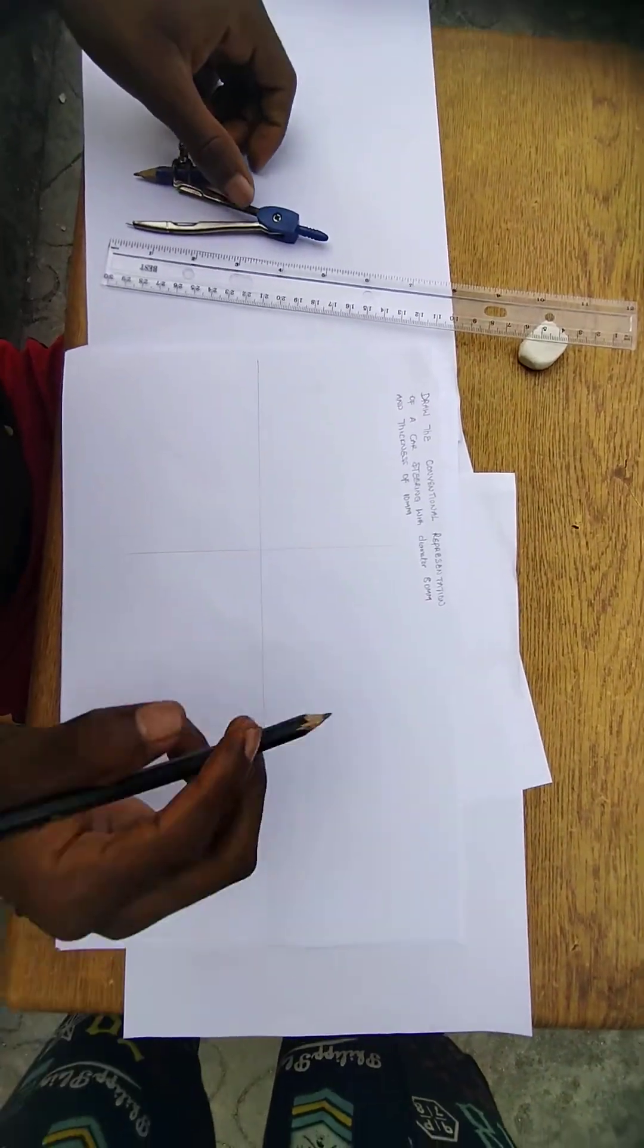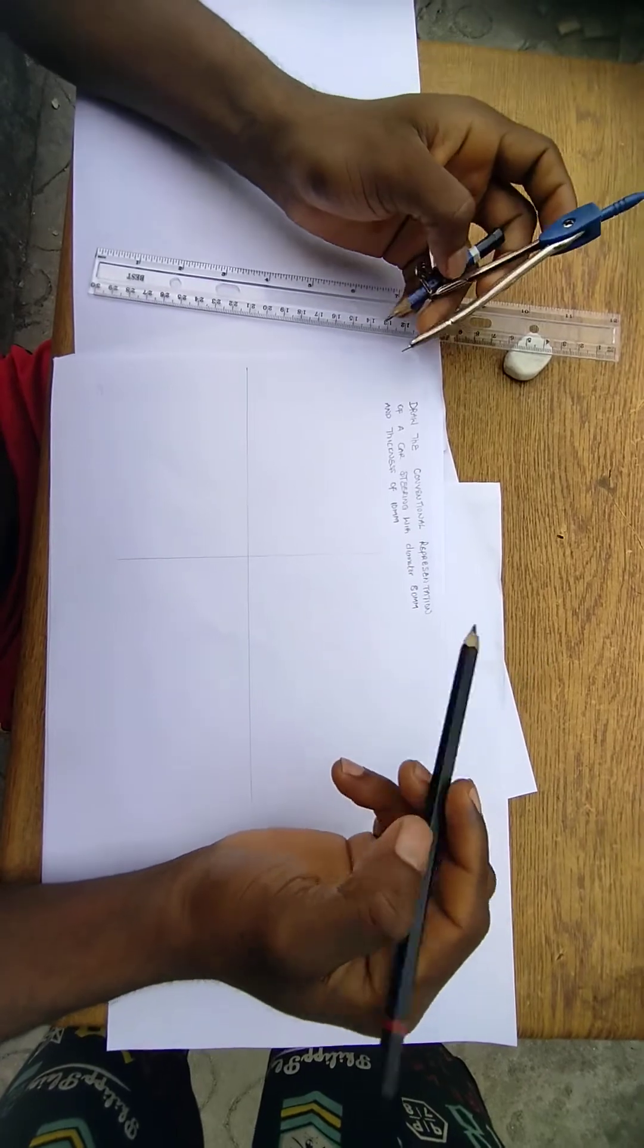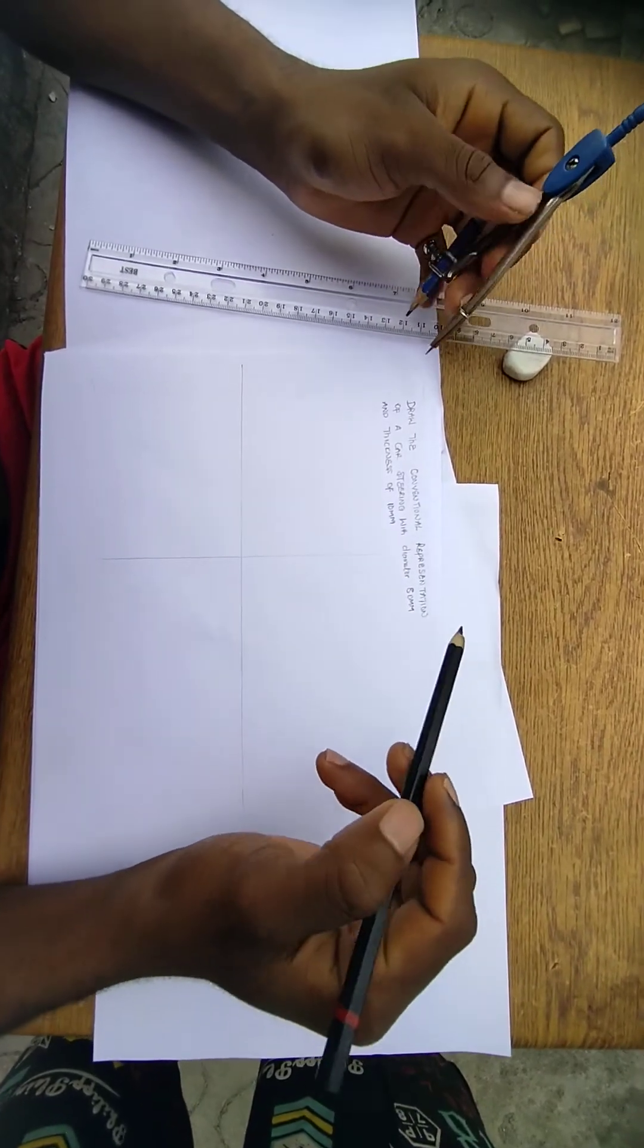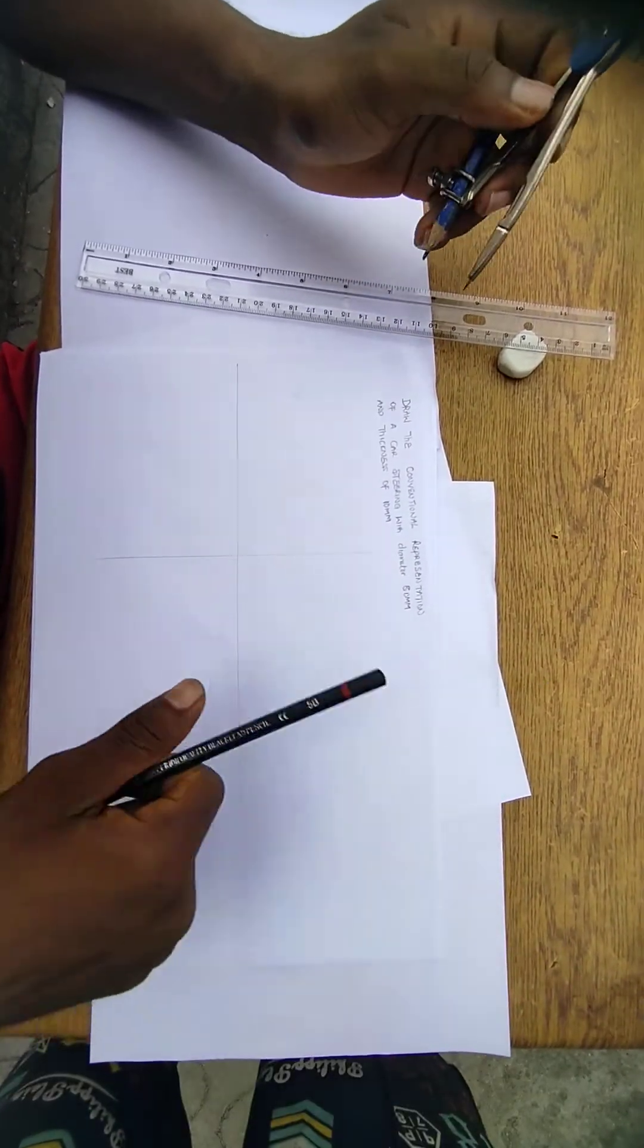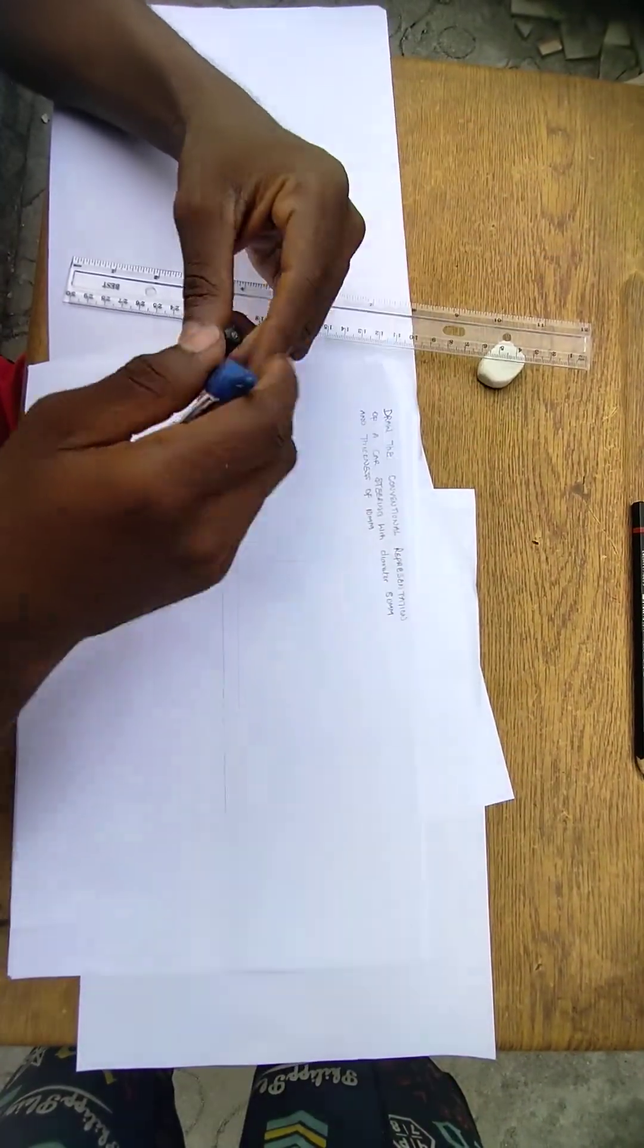Now class, now look at this. This question says, draw the conventional representation of a cast iron with diameter 80 mm and thickness of 10 mm. Now looking at this question, you don't need a source here to tell you that this question is under convention.